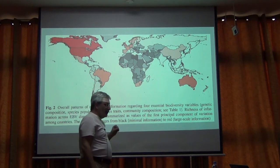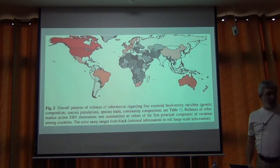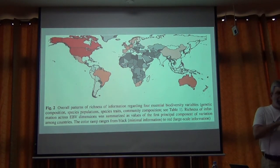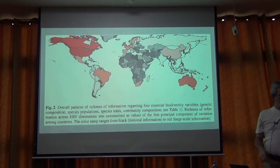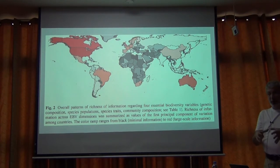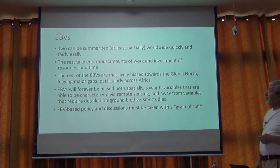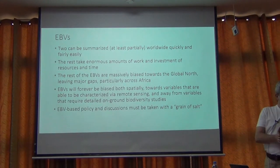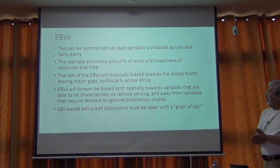There's a relative dearth of information in that diagonal band. Obviously there is some information there, but it's relatively poorer. This really points out that it's not just that we don't have much information about one thing — it's an uphill battle on many fronts. That may mean that a lot of you need to focus attention and energy at the data gathering, data capture, and data-enabling level before you can get to the things you may be more interested in. To sum up with EBVs: two of them can be summarized worldwide quickly and fairly easily. The remaining ones take enormous and maybe impossible amounts of resources and time.